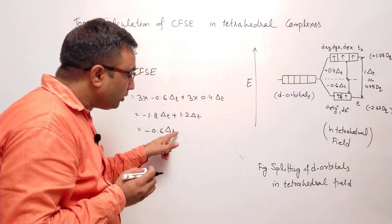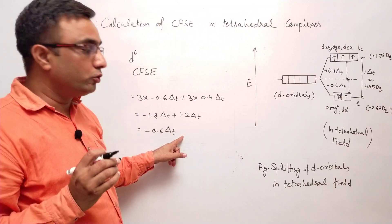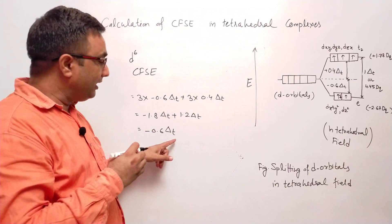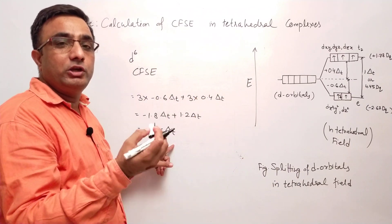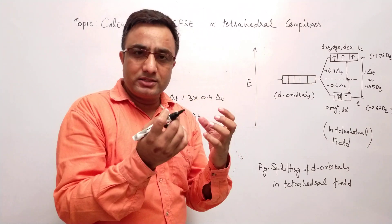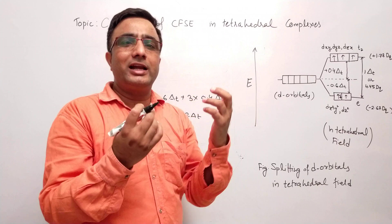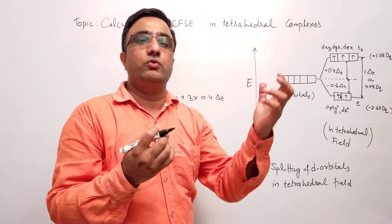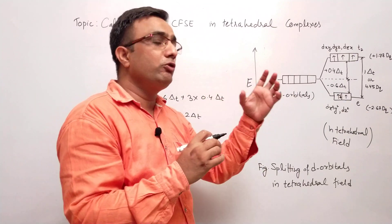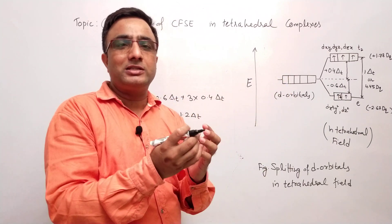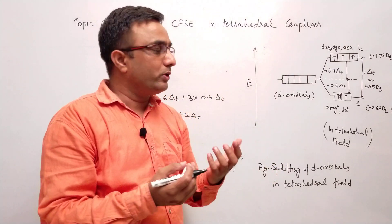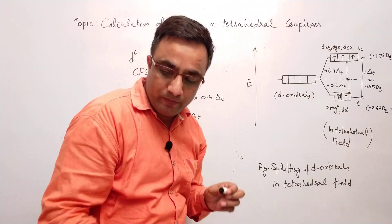If you want to calculate CFSE in terms of DQ, multiply the delta T value by 4.45 to get the value in DQ. In some exam questions it may be asked to calculate CFSE for tetrahedral complexes in terms of DQ — then you need to calculate accordingly. Otherwise, calculating CFSE in terms of delta T is sufficient. If needed, multiply by 4.45 to convert to DQ.